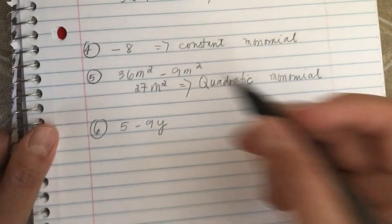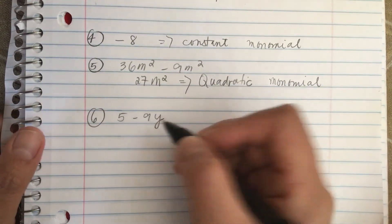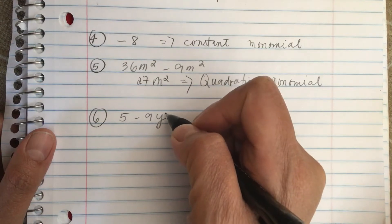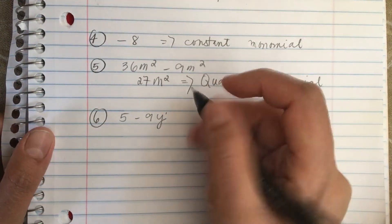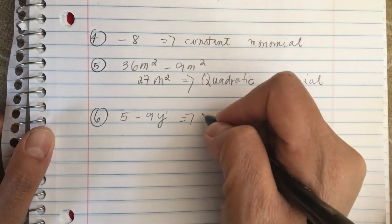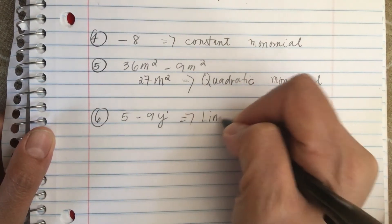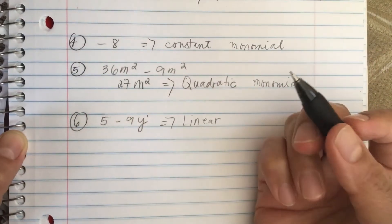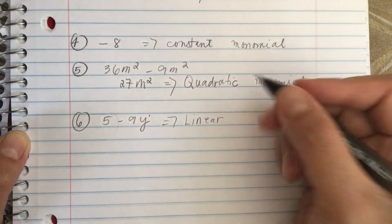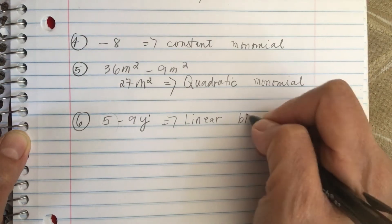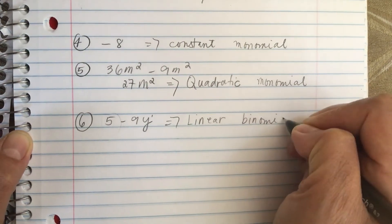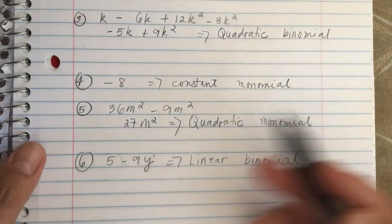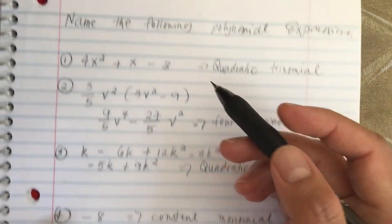We have 5 minus 9y. The highest power of y is just 1, so it is called linear. And there are 2 terms — we have 5 and minus 9y — so it is a binomial. This is a linear binomial. So these are the names of the polynomial expressions.